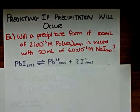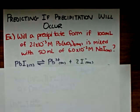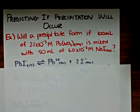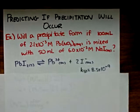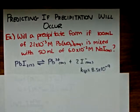When we do these problems, we want to look at the reaction quotient, because the reaction quotient takes into account the concentration of each of the aqueous species at any point in the reaction. The numerical value we get from the reaction quotient we'll compare to the Ksp value for this equilibrium. The Ksp value for lead(II) iodide is 8.5 times 10 to the negative 9.